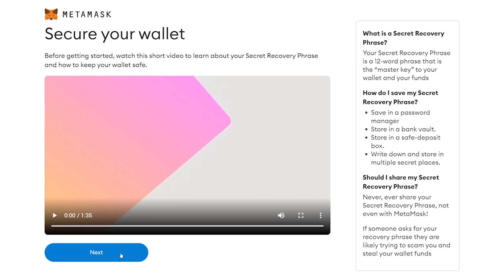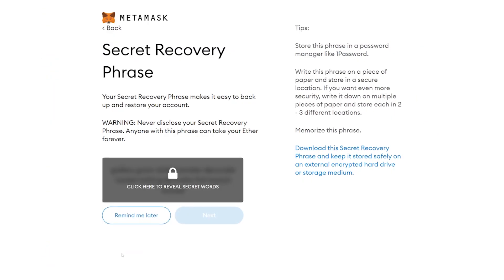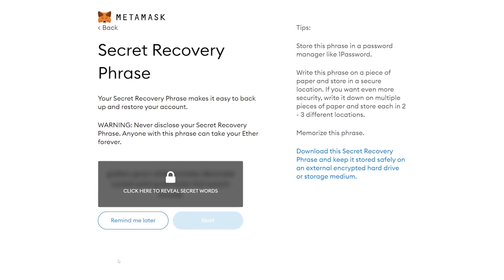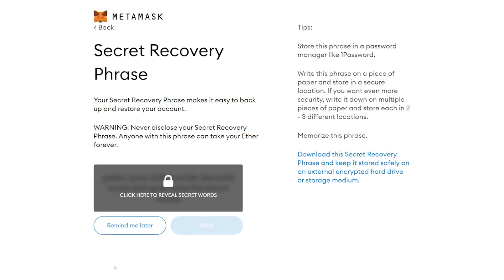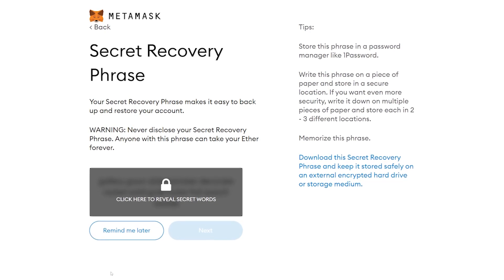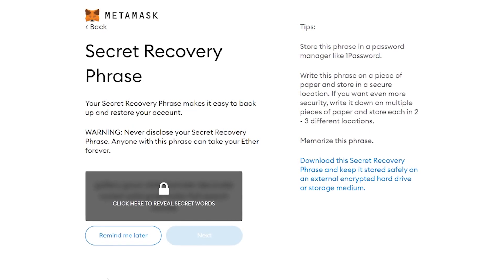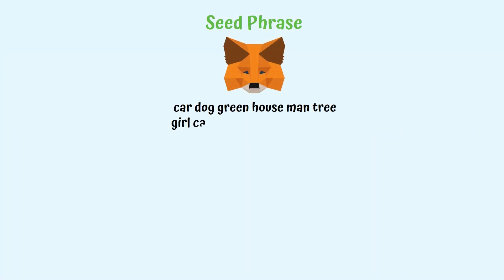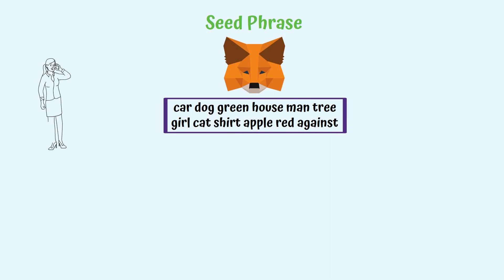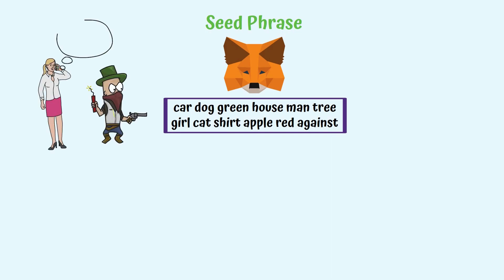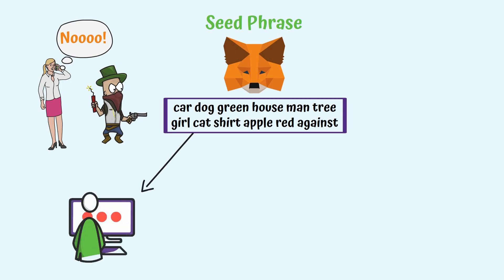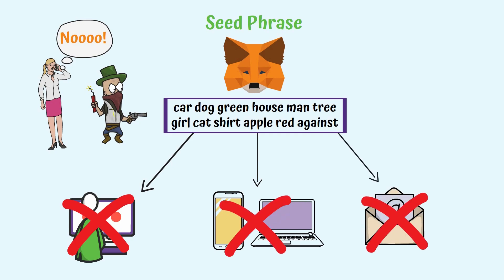The next page is where we receive our seed phrase. In short, this seed phrase is extremely important as we will use it when we want to import the Metamask account on any other device, or if we want to recover our account. The Metamask seed phrase is made out of 12 random words which you should never disclose to anybody, otherwise those people will have access to the account as well. It is also important to mention that you should never keep this seed phrase in a digital format like on your phone, laptop, or email.